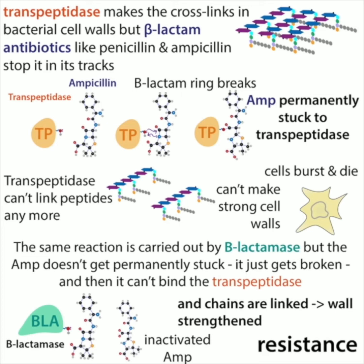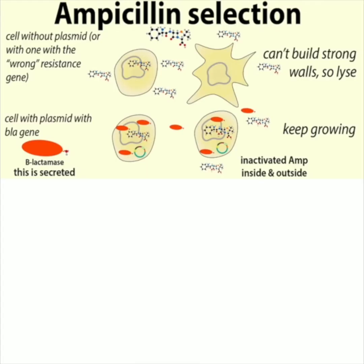Resistance is often done with beta-lactamase — the antibiotic resistance gene is this beta-lactamase gene. Beta-lactamase attacks the beta-lactam and breaks it so that it can't be used. Normally, the transpeptidase attacks the ampicillin or penicillin or the beta-lactam, that ring breaks, and the antibiotic gets permanently stuck. But here, beta-lactamase breaks it before it even gets stuck, so it's basically inactivated. Only cells that have the beta-lactamase gene will be able to do that, and hopefully that's only cells that have your plasmid in them.